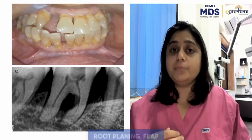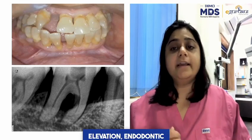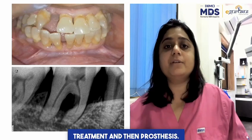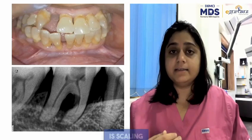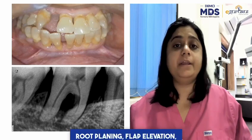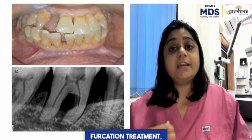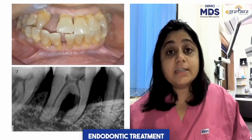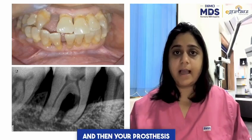Option B: scaling root planing, flap elevation, endodontic treatment, and then prosthesis. Option C: scaling root planing, flap elevation, furcation treatment, endodontic treatment, and then prosthesis.